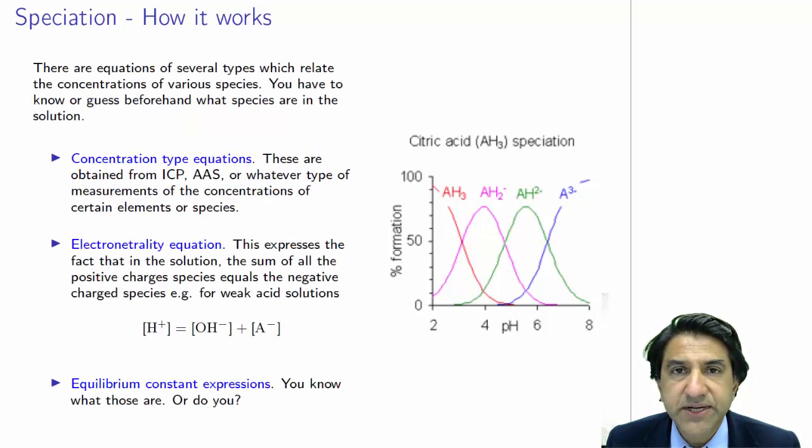Let's talk about the kinds of equations that you can get. The equations that you get will give you these degree of dissociation numbers, and the types of equations can be classified into three types: concentration type equations, electro-neutrality equations, and equilibrium constant expressions.